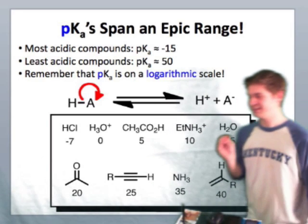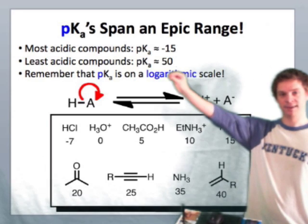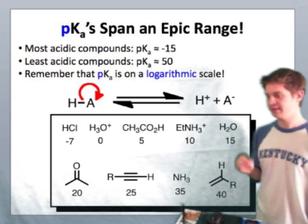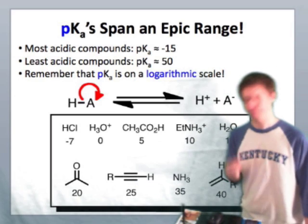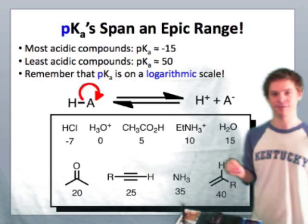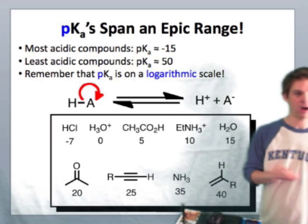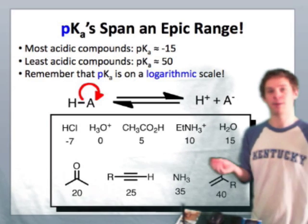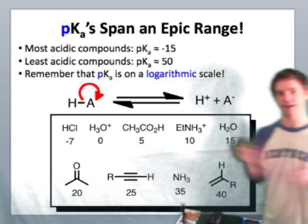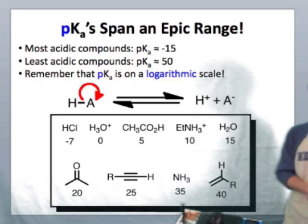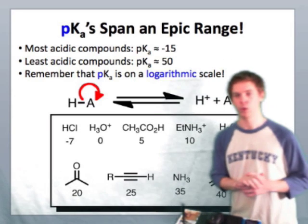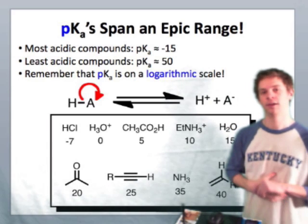That means that the acidity of alkanes is about 10 to the 65 times less than the acidity of the strongest mineral acids. 10 to the 65 is a number that we can barely even begin to fathom. It's tens of orders of magnitude greater than even the population of the Earth. And so this is really a staggering range that molecules can span in terms of acidity, from the least acidic, alkanes, to the most acidic, the inorganic mineral acids with extremely stable conjugate bases.